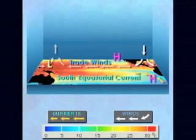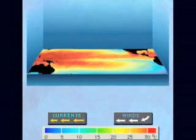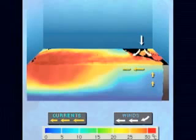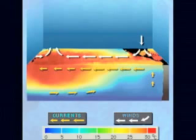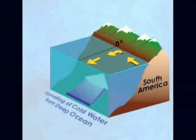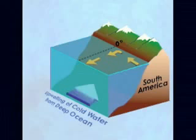Wind blowing over the sea creates ocean surface currents. These surface currents drive a circulation system deep in the ocean. As the South Equatorial Current moves water away from the coast of South America, this water is replaced by colder water rising up from the deep ocean.